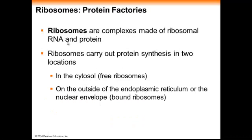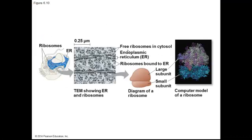Ribosomes are made up of ribosomal RNA as well as a couple of different kinds of proteins. They carry out protein synthesis in two places: either in the cytosol — these are called free ribosomes because they're not bound to anything — or ribosomes can carry out protein synthesis in the endoplasmic reticulum or in the nuclear envelope. We call these bound ribosomes because they are stuck in those membranes. Notice that the ribosomes are made up of two protein subunits, a large one and a small one.